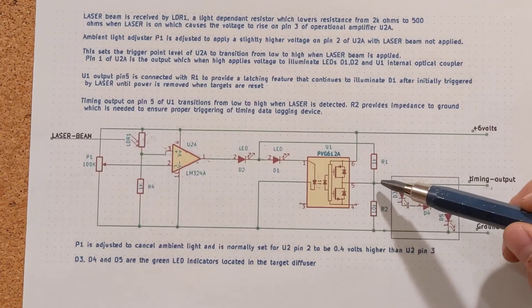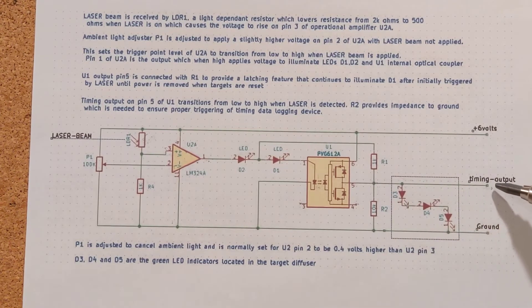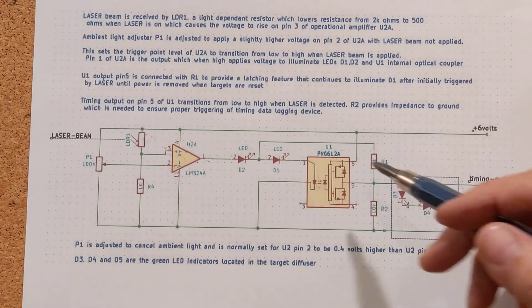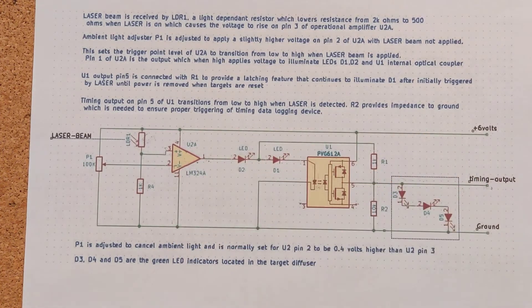On that output line that goes to the Arduino, that's the timing output for digital signal acquisition that'll give you the timing and lets you evaluate your performance. Then there's just six volts DC and a ground here.